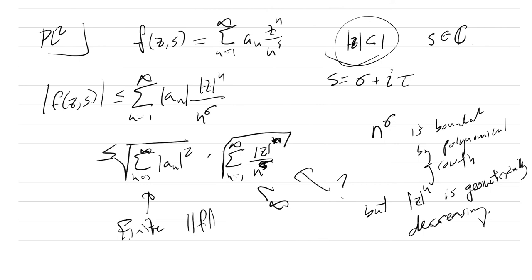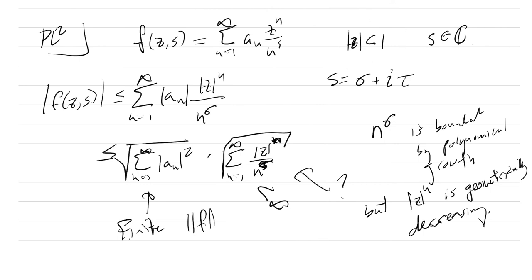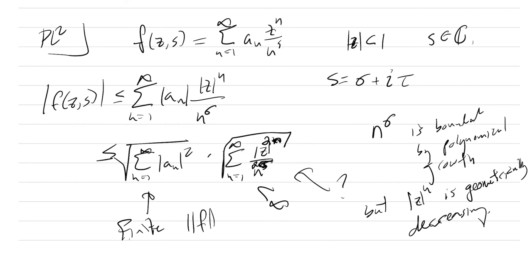If we allowed |Z| = 1, we'd have to restrict S to the right half plane. There was a small correction: at the Cauchy-Schwarz step, things should be squared. But the argument still stands. So that's the polylogarithm and the polylogarithmic Hardy space — we've justified S being inside all of C provided |Z| < 1.